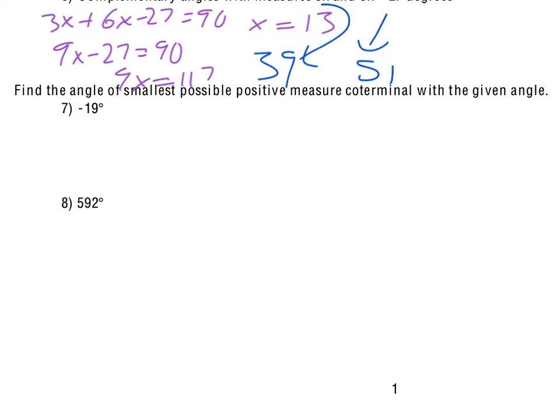For 7 and 8, we are trying to find the angle of smallest possible positive measure that's coterminal with the given angle. So coterminal angles are always going to be 360 degrees apart, or multiples of 360. So really all we do is we add or subtract multiples of 360 in order to come up with those coterminal angles, and so the negative 19 plus the 360 ends up giving us 341 degrees.